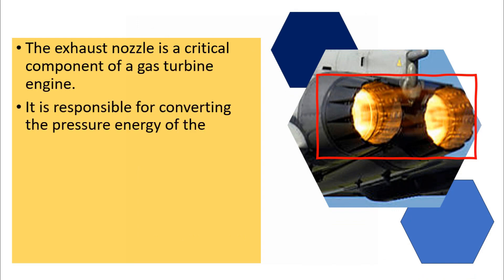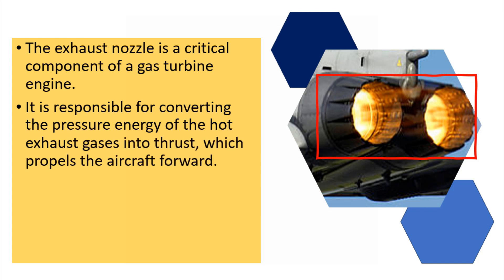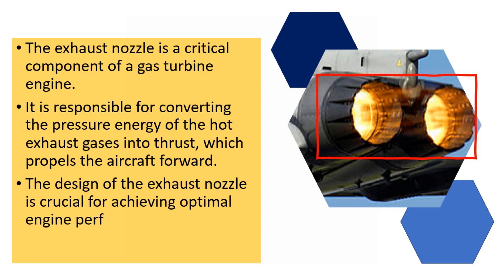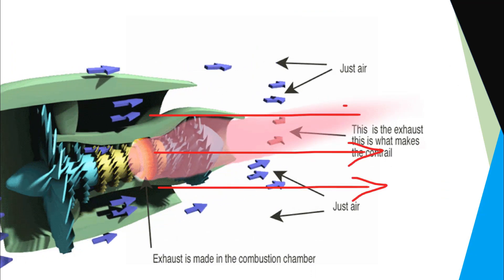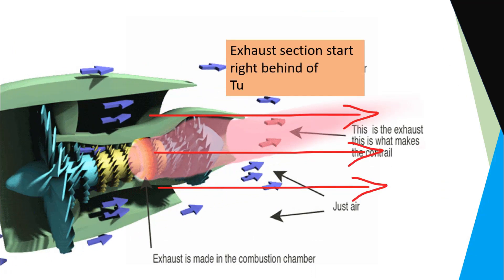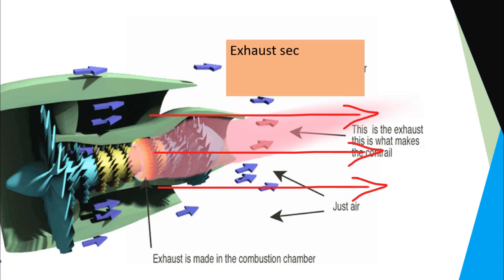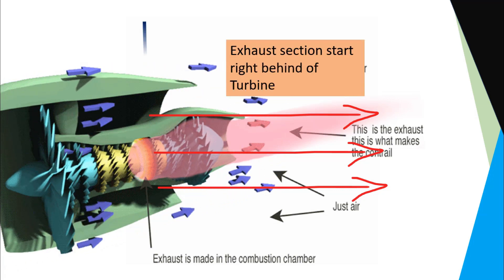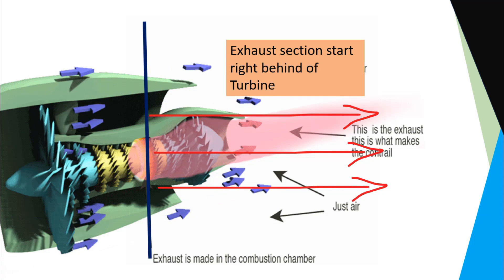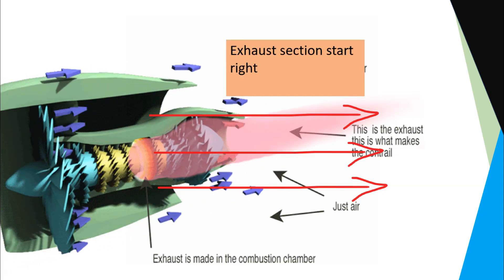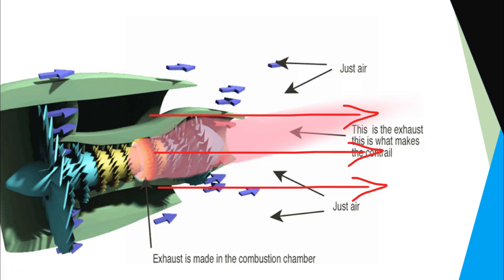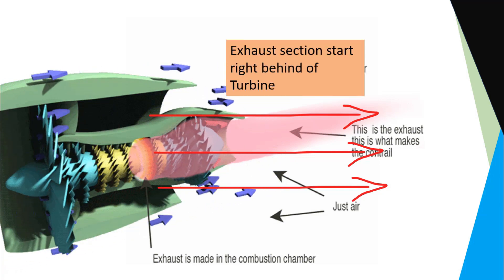The exhaust section of a turbojet engine is composed of several critical components, each with its unique function. They all share a common objective: to direct the flow of exhaust gases rearwards in a way that prevents turbulence and simultaneously imparts a high exit velocity to the gases. This is especially important for turbojets and, to a somewhat lesser extent, for turbopropeller engines. The exhaust section is positioned right behind the turbine section and extends to the point where the gases are ejected into the atmosphere.